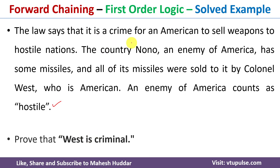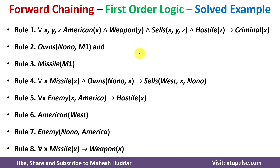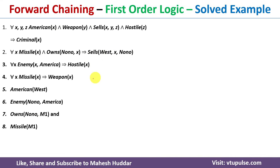In the previous video, I have already discussed how to convert this problem definition into first order logic — the link for that video is given in the description below. Once you convert this problem definition into first order logic, we get eight different clauses. We need to divide these eight clauses into two sets: the first is known as the rules, and the second is known as the facts.